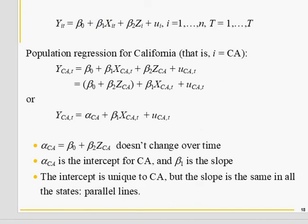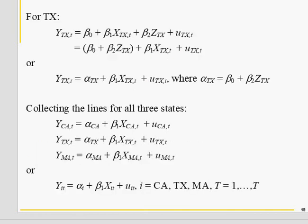For example, if you have three states — California, Massachusetts, Texas — for California you have intercept beta naught plus beta 2. For Massachusetts you will have beta naught plus beta 2 Massachusetts, and so on. We will have a different intercept for each state, but the slope is the same for each state.